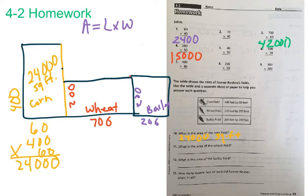Number 11 asks, what is the area of the wheat field? Well, we have the exact same formula, area equals length times width. So here we have 200 times 700, and I'm going to practice hanging my zeros.